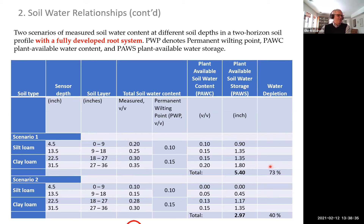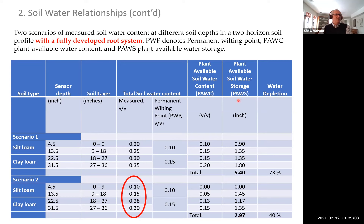Now the drier scenario — for example, a year like 2012. Using the same permanent wilting point limits but much lower measured water contents, the plant available water storage is less than three inches. Three inches compared to the total plant available water storage capacity is only 40%, so irrigation should have been initiated long ago.